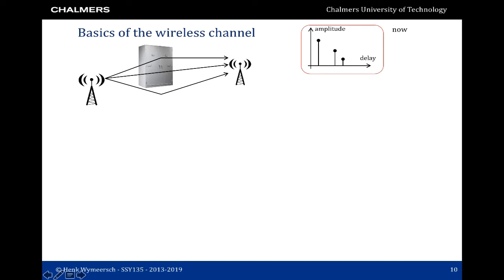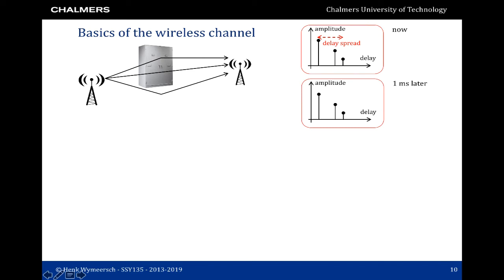Let us look a little bit deeper into the wireless channel. Consider a scenario with a transmitter, a receiver, and an object with three propagation paths: a line-of-sight path, a path reflecting off a cabinet, and a ground reflection. The channel seen by the receiver has three distinct paths in the delay domain. This channel will change over time — if we look a little bit later the channel changes very little if the time difference is very small, say one millisecond, but if we look a minute later the channel can have changed significantly because the receiver may have moved.